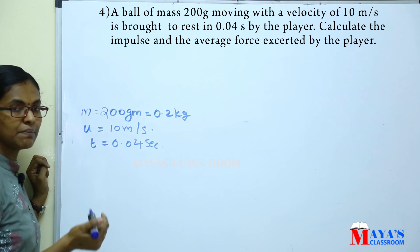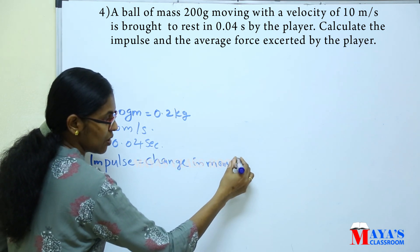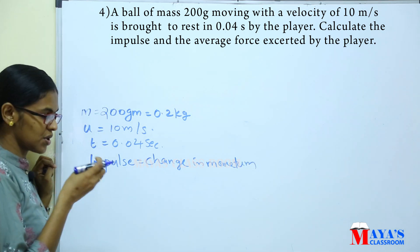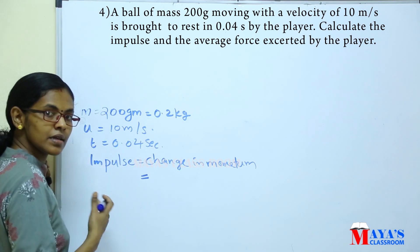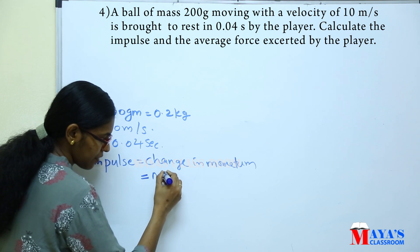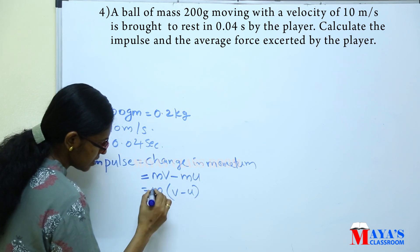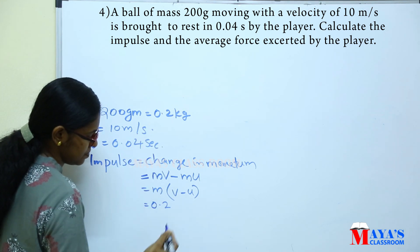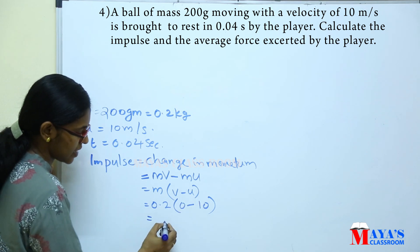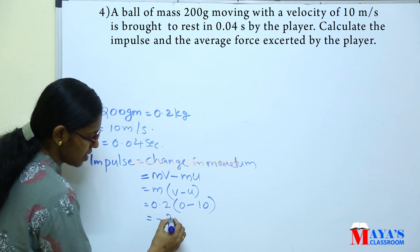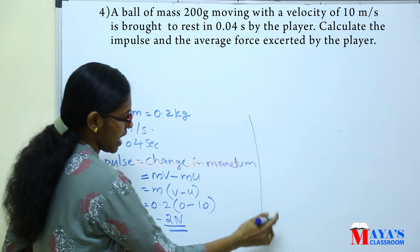Impulse equals change in momentum = m(v − u) = 0.2 × (0 − 10) = −2 N·s. The magnitude of impulse is 2 N·s. The average force is impulse divided by time = −2 / 0.04 = −50 N.